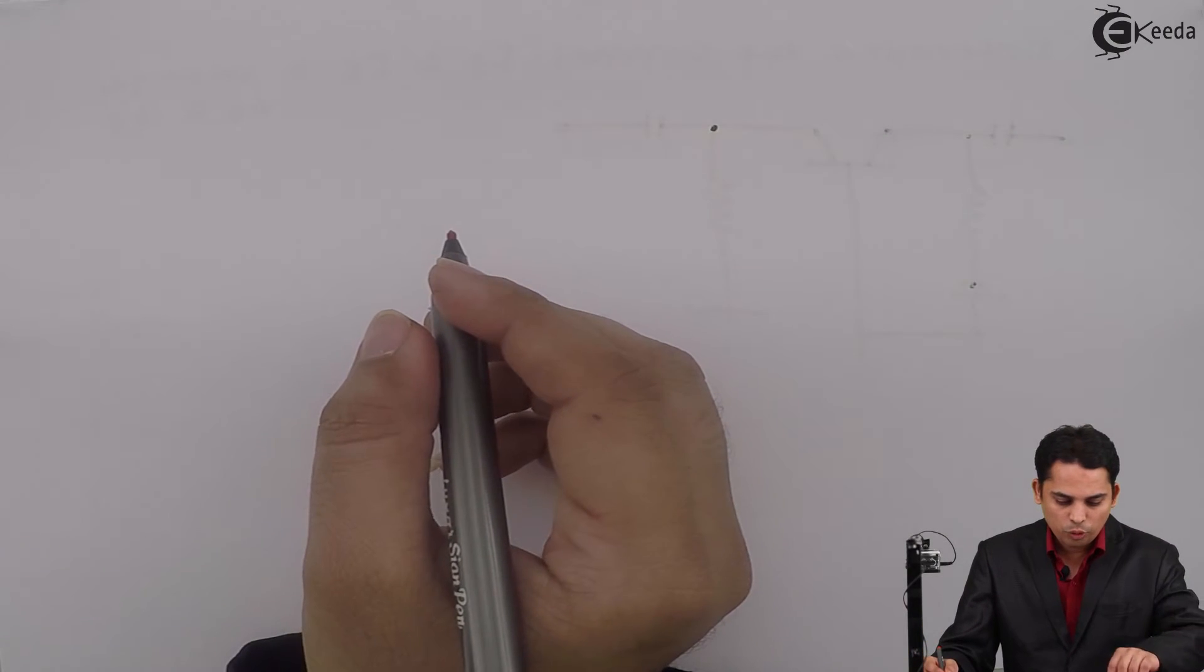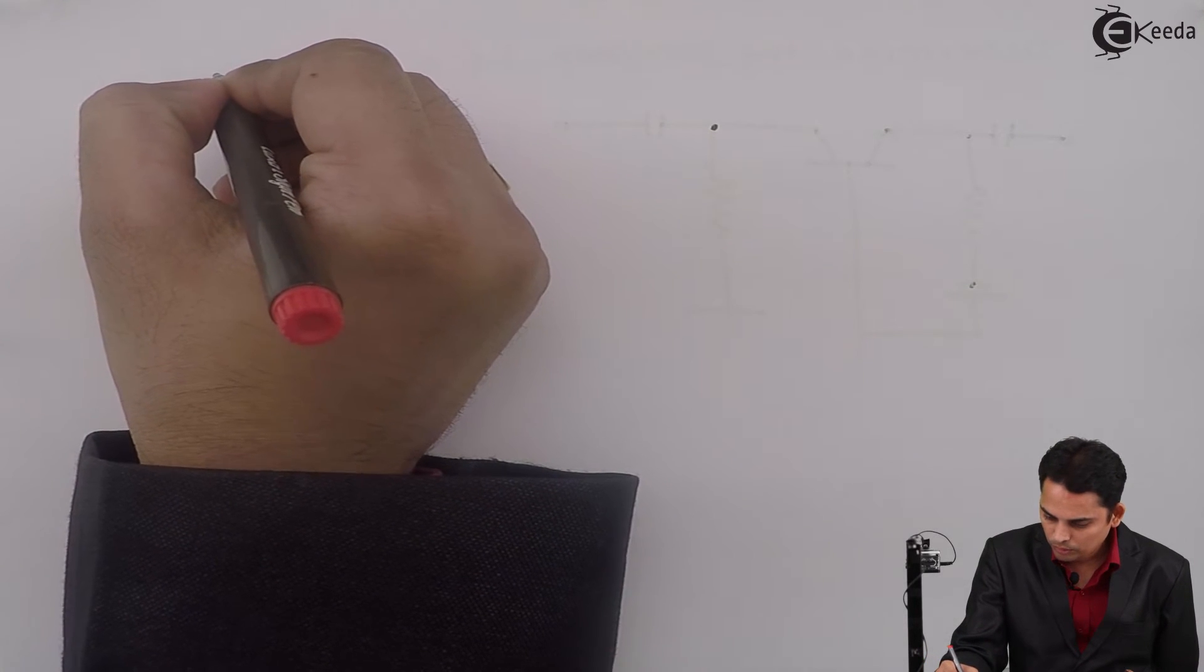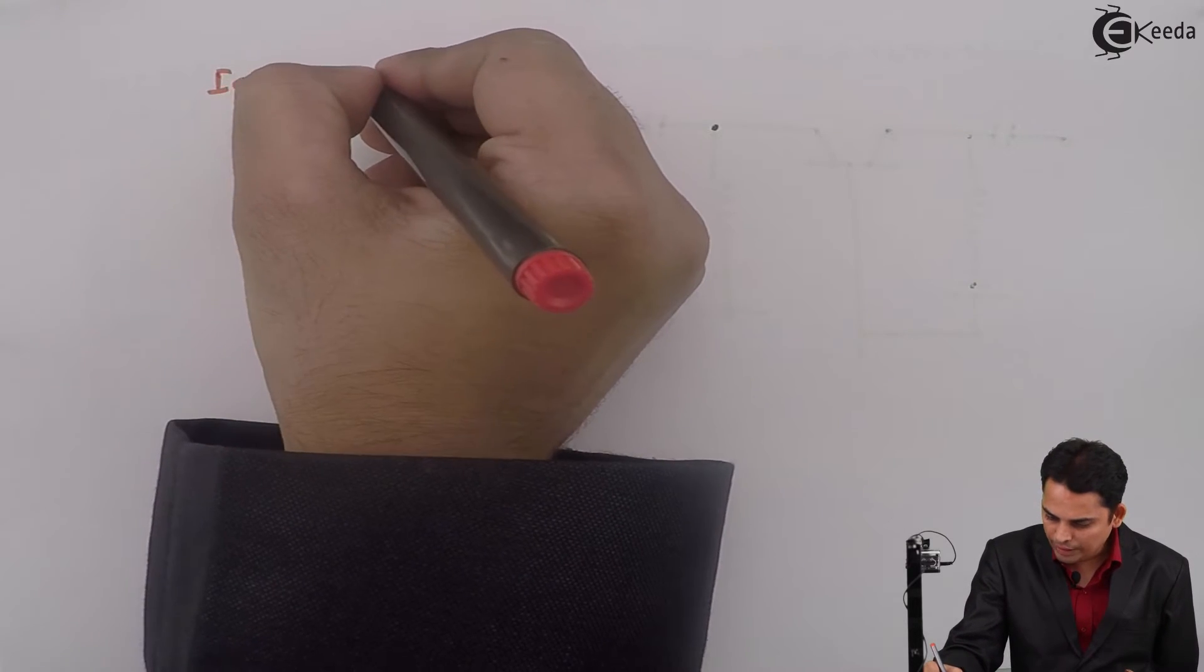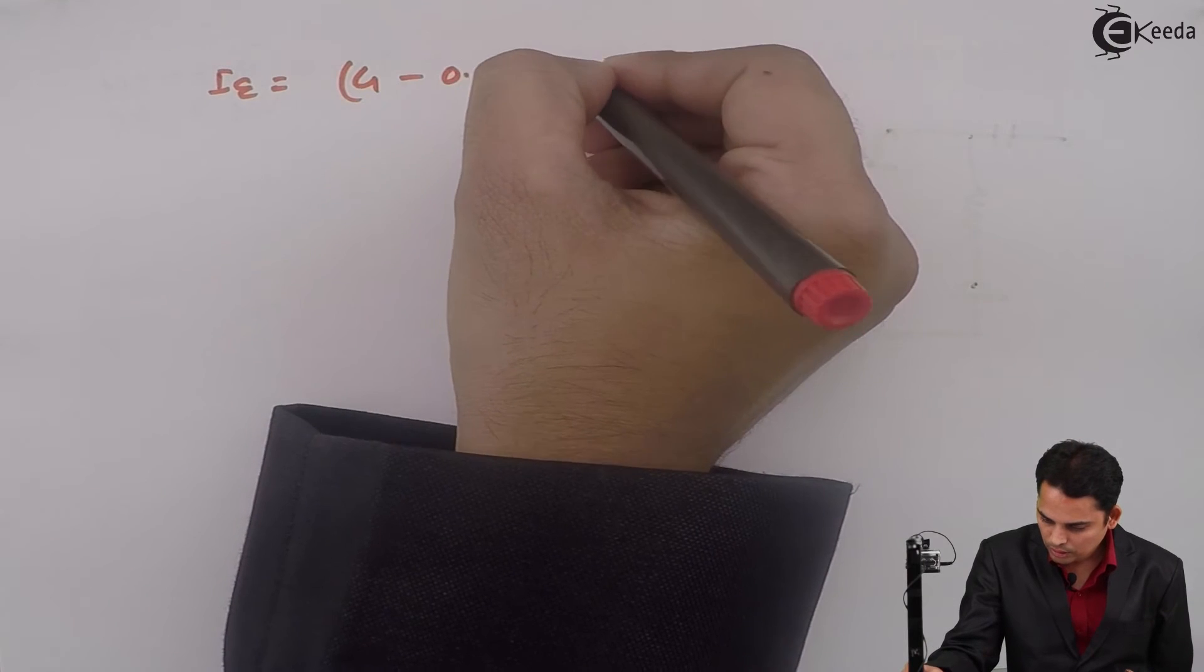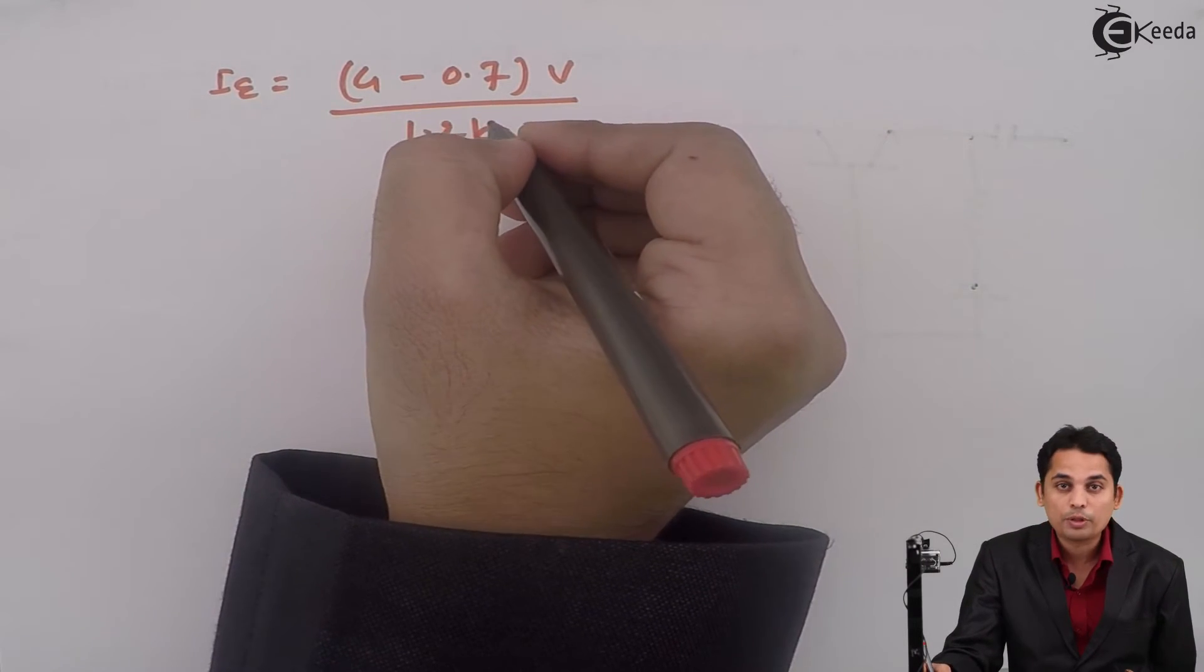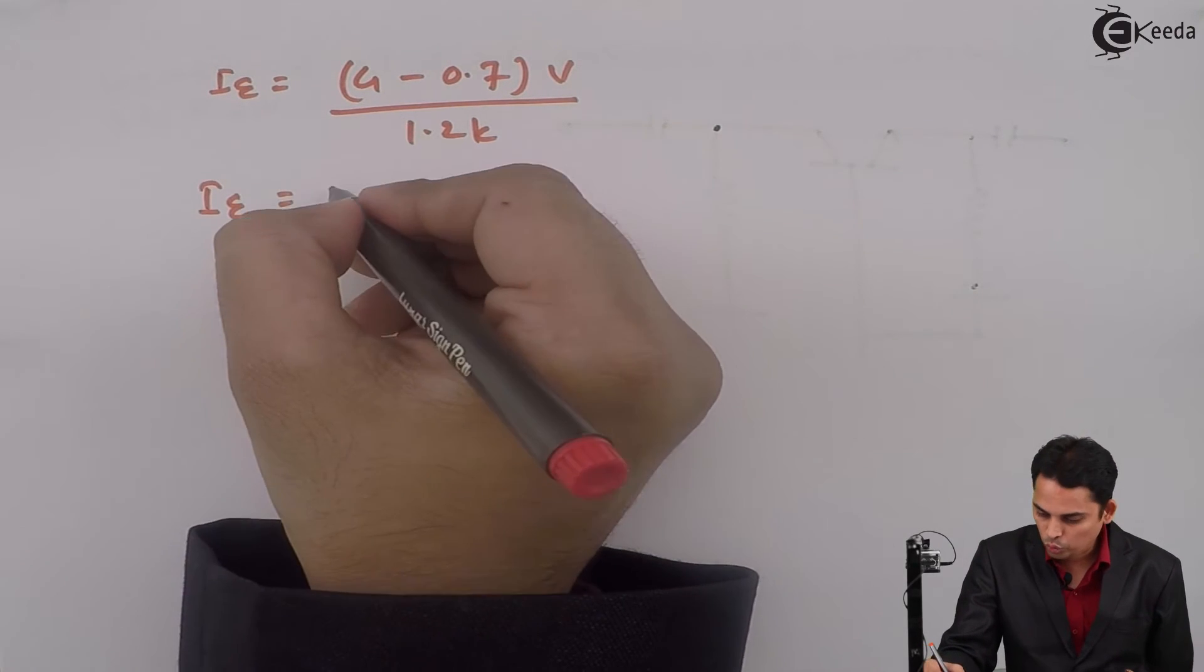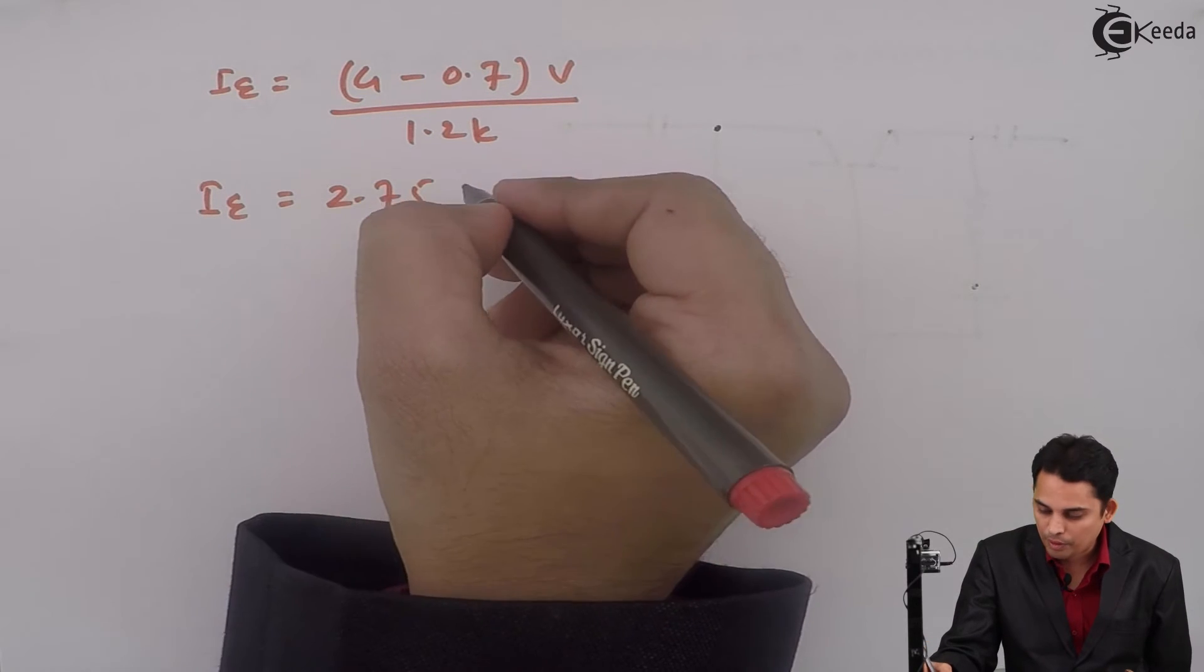If we substitute values, IE is equal to VEE given as 4 volts minus 0.7 volts divided by RE given as 1.2 kilo ohms. Hence, value of IE is equal to 2.75 milliampere.